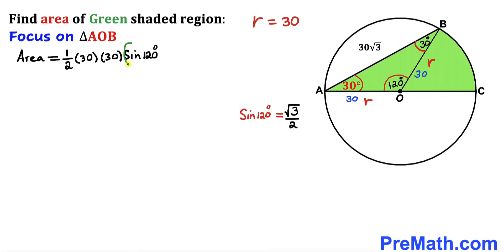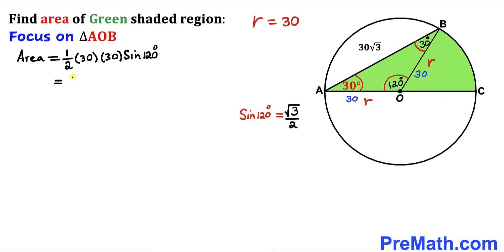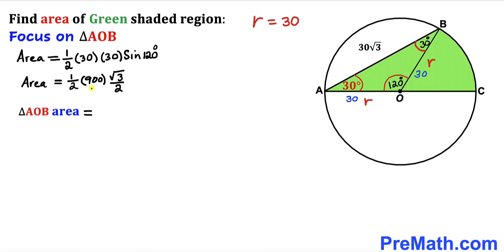So the area of triangle AOB equals one half times 30 times 30 times sine of 120 degrees. Since sine of 120 degrees equals square root of 3 divided by 2, this becomes one half times 900 times square root of 3 divided by 2. Simplifying, the area of triangle AOB is 225 times square root of 3.